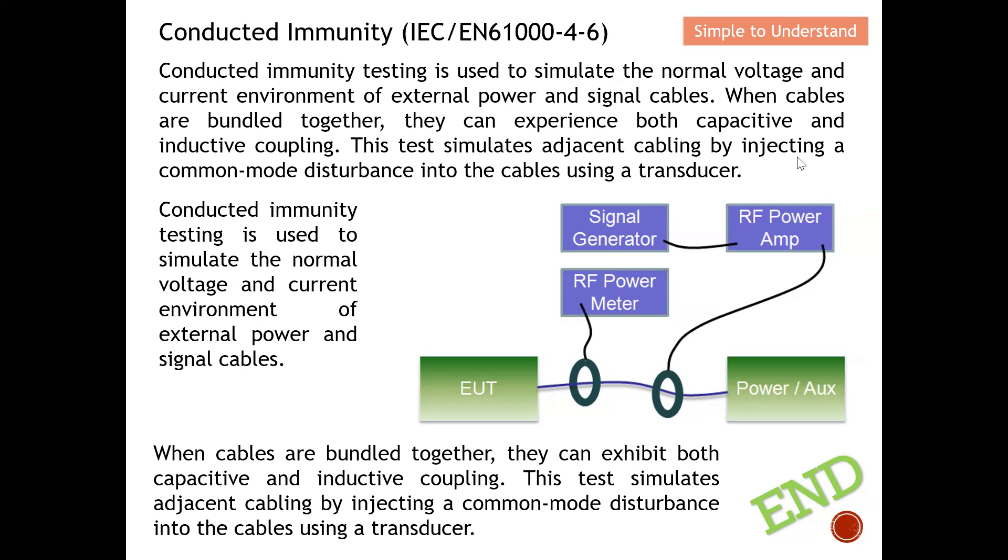This testing simulates adjacent cabling by injecting a common mode disturbance into the cable using a transducer. You send some signal that couples onto the cable and travels toward your device to see whether it can still function normally, or at least in some cases, you allow your device to fail but it must be able to reset on its own. We can inject disturbance through this coil and couple it over to the cable.